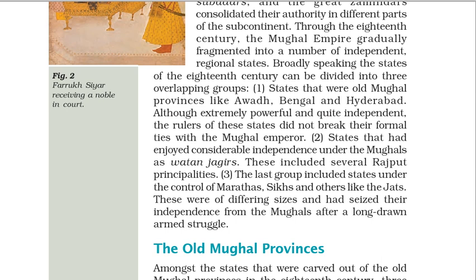One: states that were old Mughal provinces like Awadh, Bengal and Hyderabad. Although extremely powerful and quite independent, the rulers of these states did not break their formal ties with the Mughal emperor. Two: states that had enjoyed considerable independence under the Mughals as Watan Jagirs — these included several Rajput principalities. Three: the last group included states under the control of Marathas, Sikhs and others like the Jats. These were of differing sizes and had seized their independence from the Mughals after a long-drawn armed struggle.